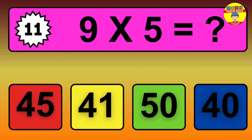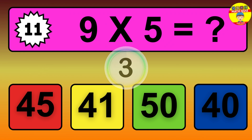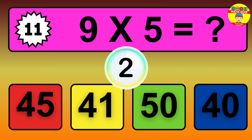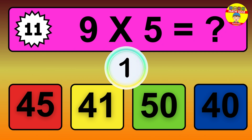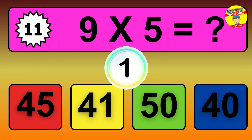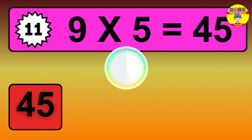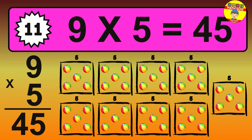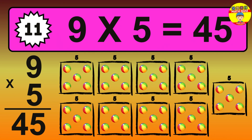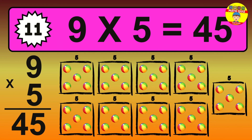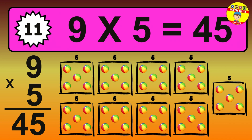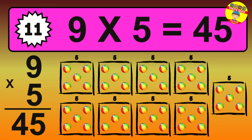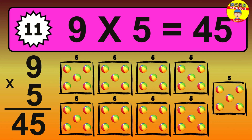Question 11. 9 times 5 equals what? The answer is 9 times 5 is 45. To calculate, we have 9 groups with 5 balls each. So how many balls do we have? 45 balls.